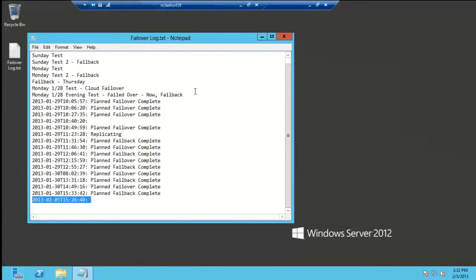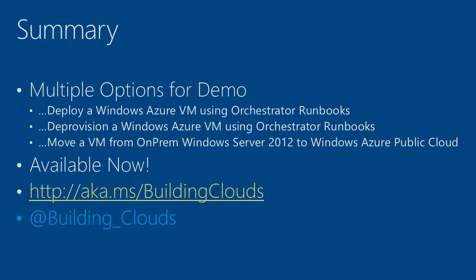Let me hop back to PowerPoint. In summary, there are multiple options for demonstration: you can deploy a Windows Azure VM using Orchestrator Runbooks, deprovision that Windows Azure VM using Orchestrator Runbooks, or move a VM from on-prem Windows Server 2012 to Windows Azure Public Cloud with Orchestrator and System Center SP1. All this is available now. Check out our blog at http://aka.ms/buildingclouds and please follow us on Twitter at building underscore clouds. Thanks for watching, I hope you enjoyed.